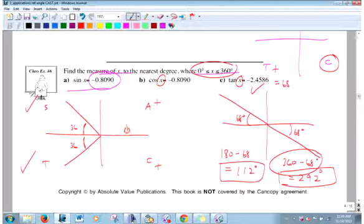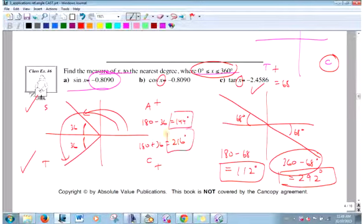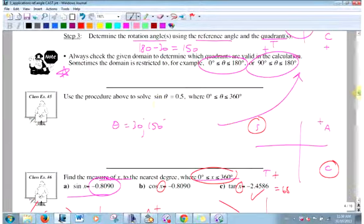So I got one there and I got one there. There's two possibilities. Finally, what is that rotation angle? What could x be? How do I get from here to here? 180 minus 36 is 144. 180 plus 36 is 216.